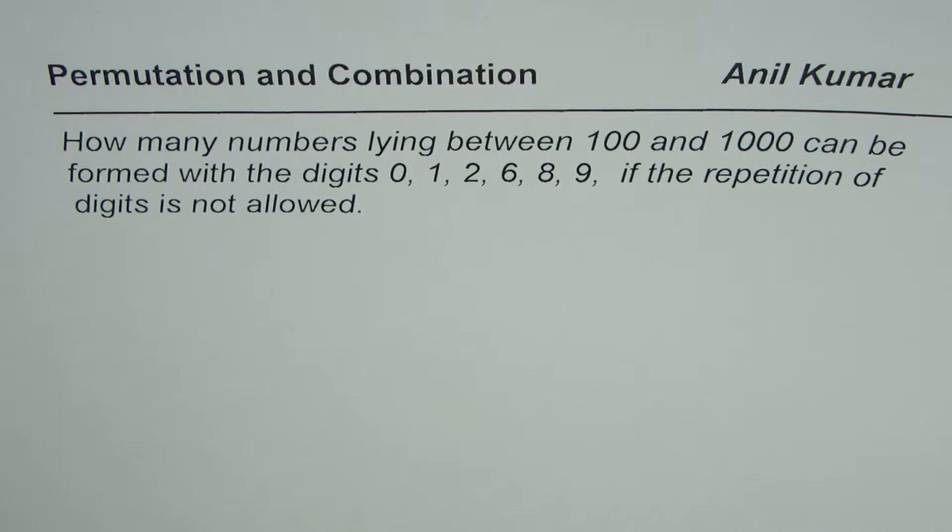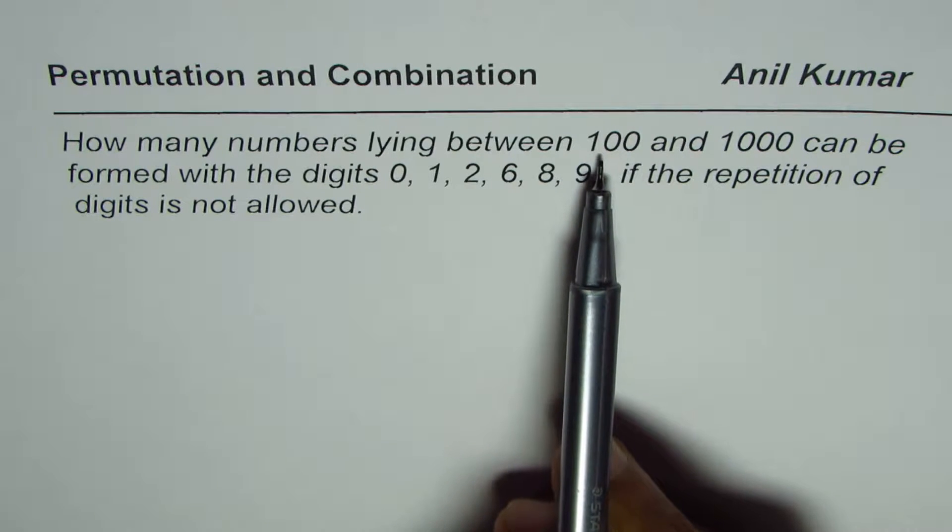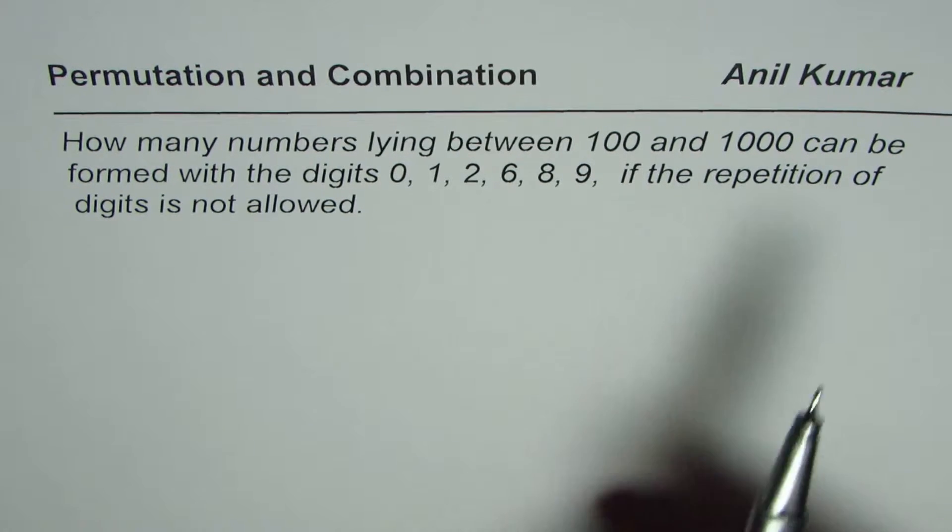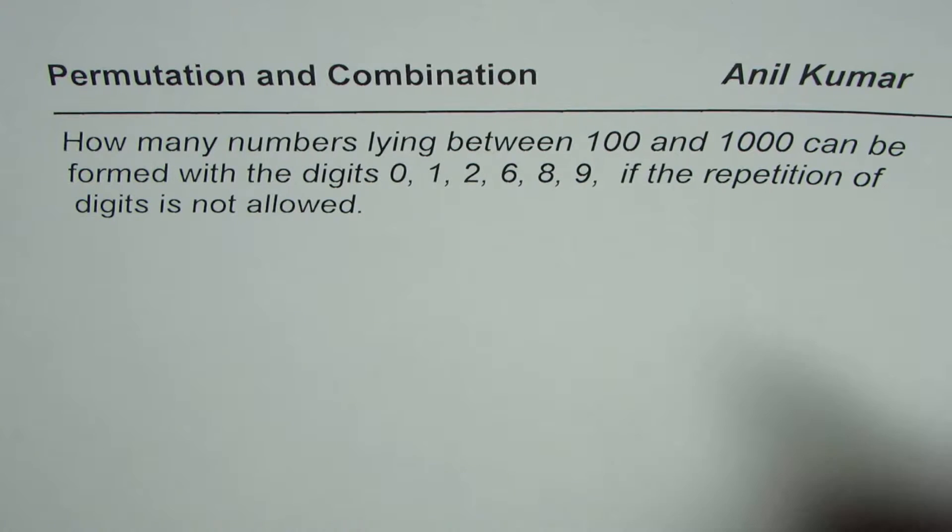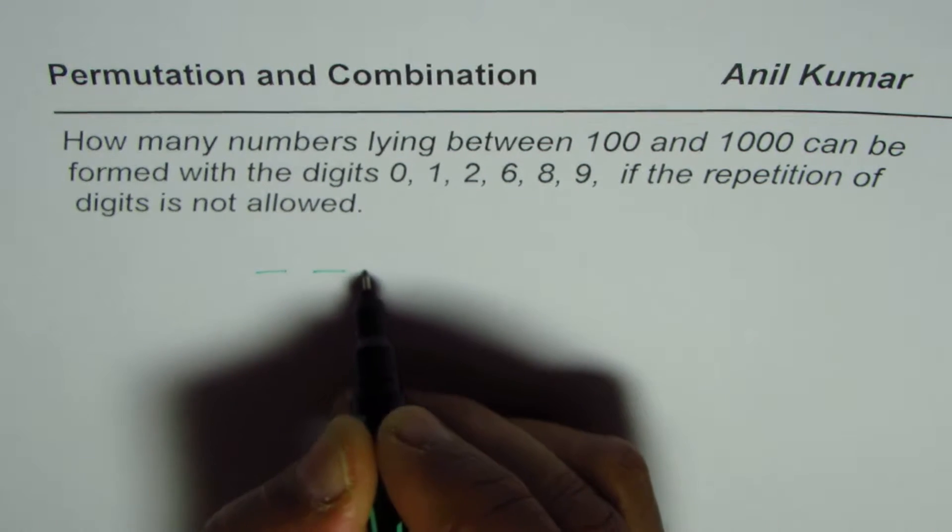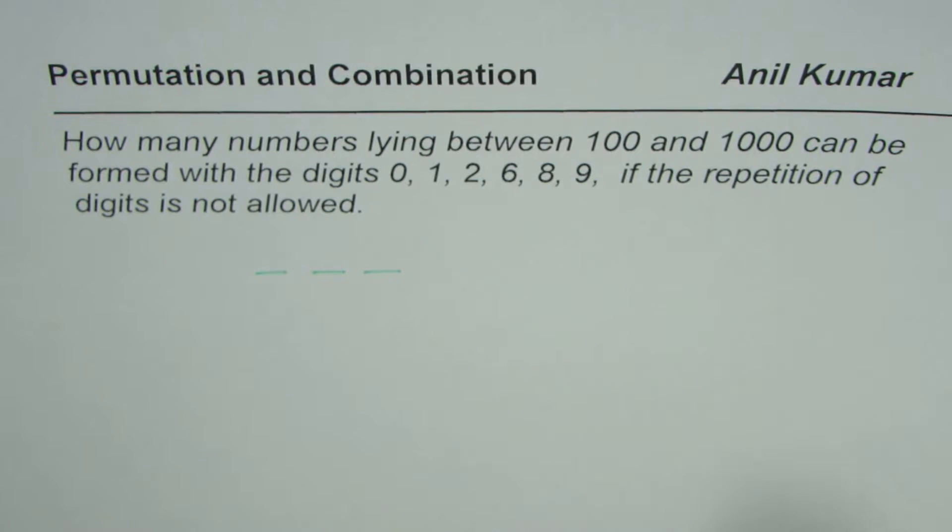Now, you notice numbers lying between 100 and 1000 are three-digit numbers. So these are three-digit numbers. 999 will be the highest number.